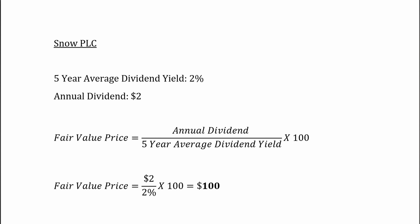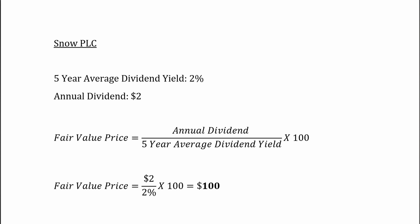Looking at Snow PLC, which has a five-year average dividend yield of 2% and a current annual dividend of $2, we can conclude that its share price should be $100. If its current dividend yield is 3%, using the same calculation with the current yield, the share price should now be $66.67. If the current dividend yield were 1%, the share price should be $200. This shows that, holding all else constant, if the current dividend yield is greater than the five-year average, the stock is most likely undervalued — and if the current yield is lower than the five-year average, the stock is most likely overvalued.